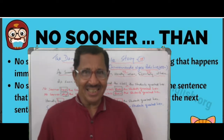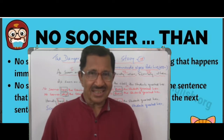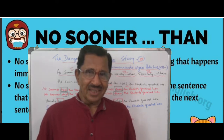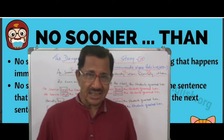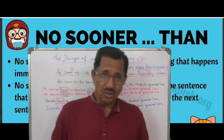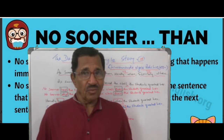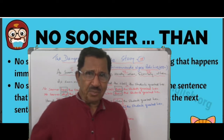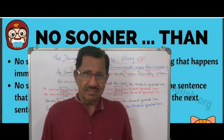We have done Conditionals: zero, first, second and third. Now we have another very interesting topic in English grammar: 'no sooner... as soon as... scarcely... no sooner than... hardly when... scarcely when.' You can express the same idea in four different ways. That's what we are going to do now.